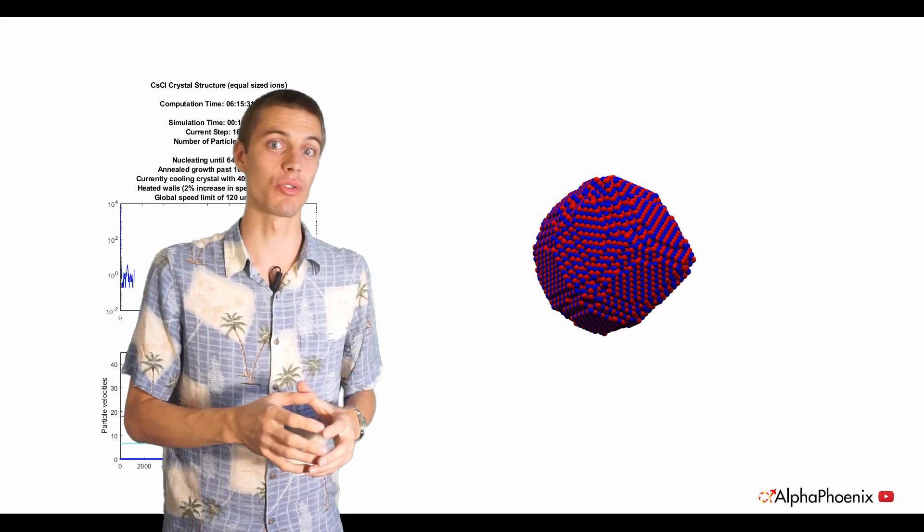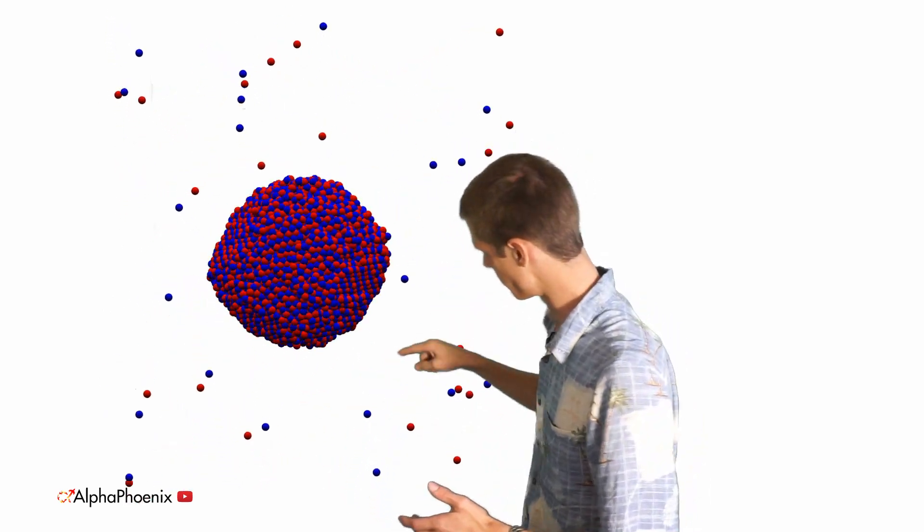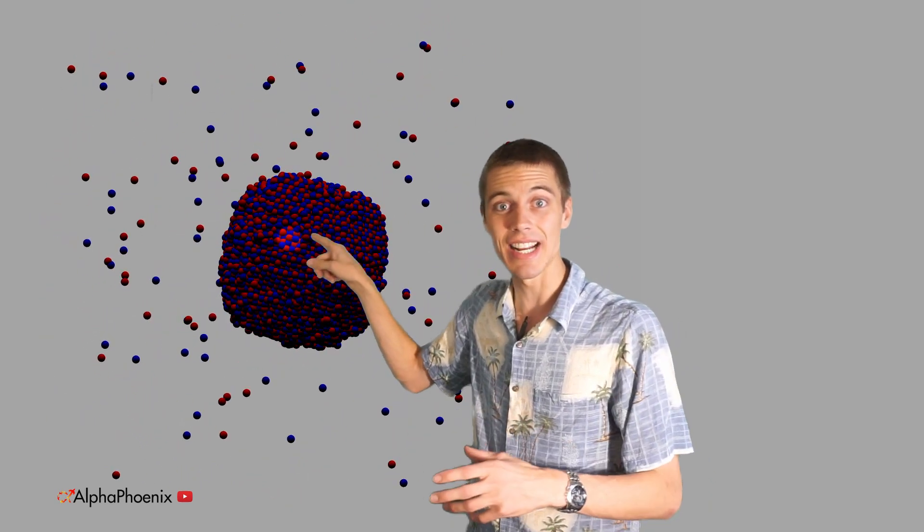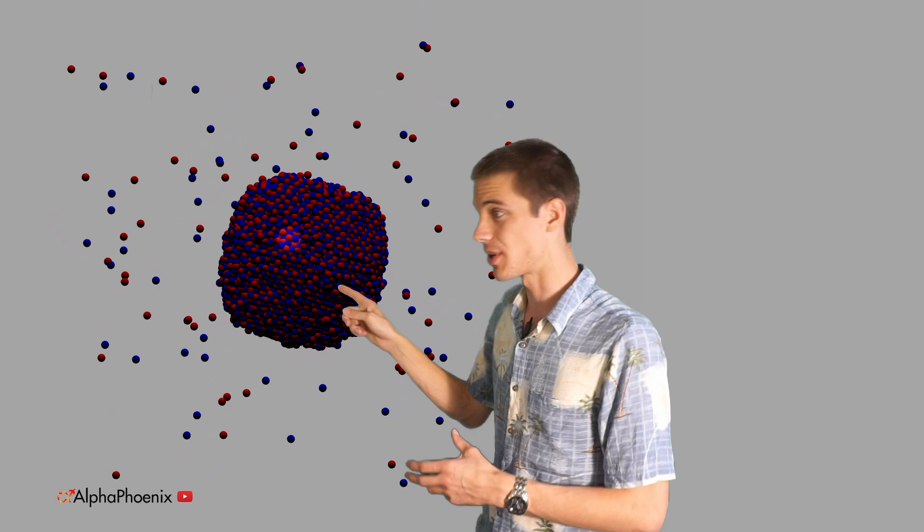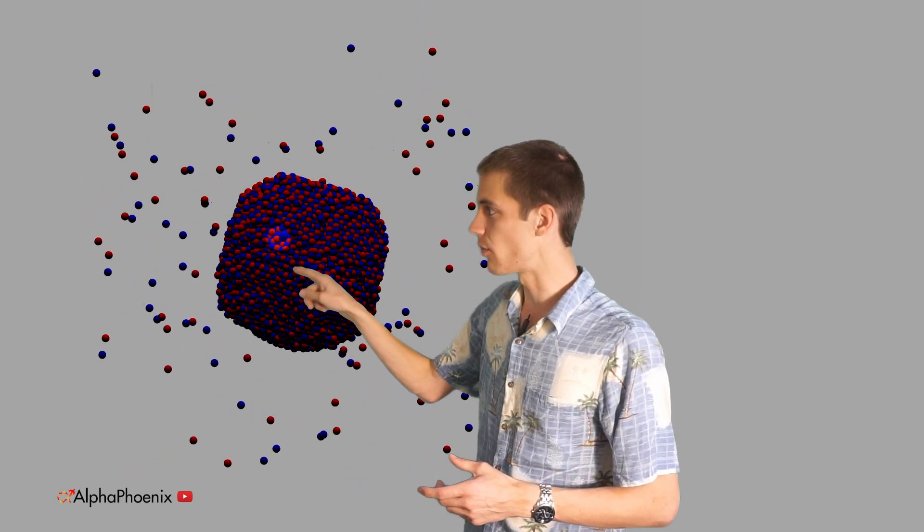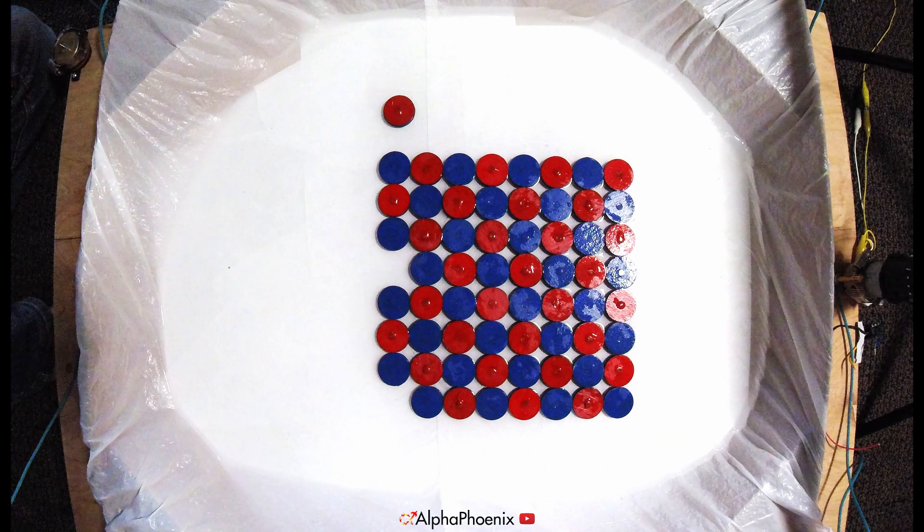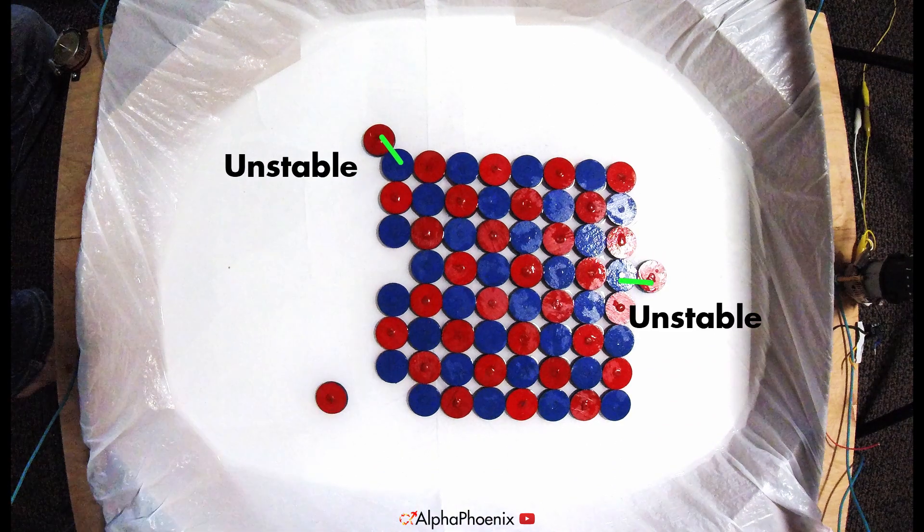If we trace a single particle in this simulation, like this red particle here that's flying around, we can see that eventually it actually lands on the surface of the growing crystal. But once it's on the crystal, it doesn't actually stop moving. It keeps wandering around until it gets really solidly stuck. You could imagine in two dimensions that a particle on a neutral surface is at most bonded to one other particle.